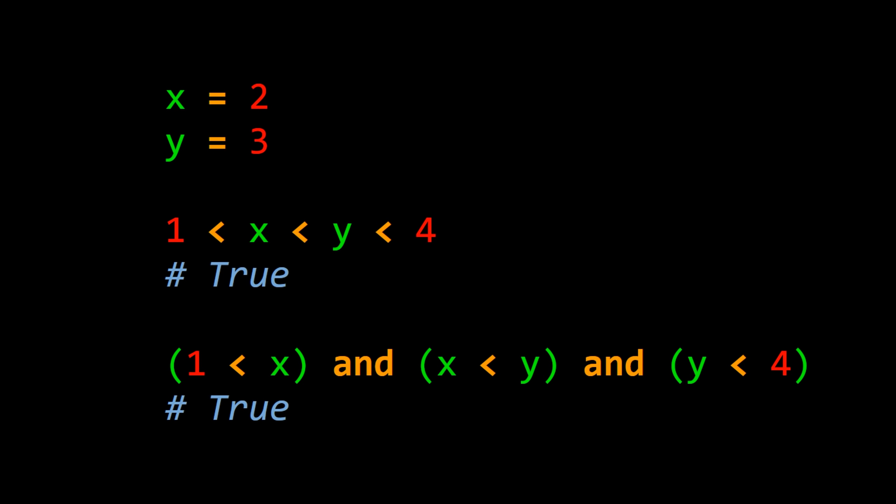The way Python evaluates the statement is the same way that we would intuitively or mathematically look at the statement, which is as a chain of binary comparison operators. 1 is less than x, and x is less than y, and y is less than 4, which again evaluates to true.